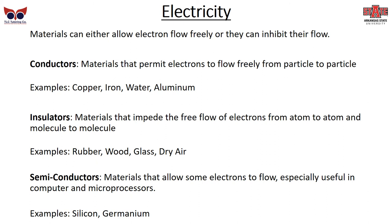Then there's a special class called semiconductors. These allow some electrons to flow, but not as much as conductors, and they're not perfectly insulated either. We can use these properties when building computers and microprocessors. Specifically, silicon and germanium — if you've heard of silicon chips — are semiconductors whose electrical properties we use to build more complicated devices.